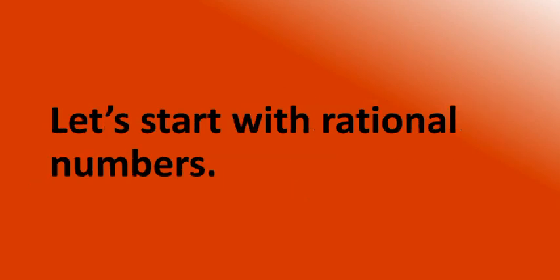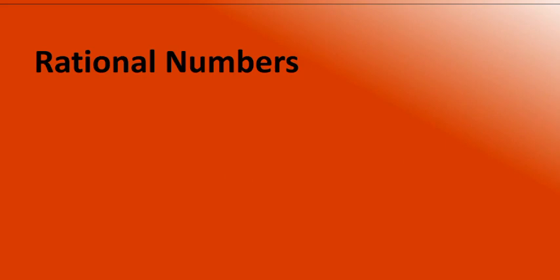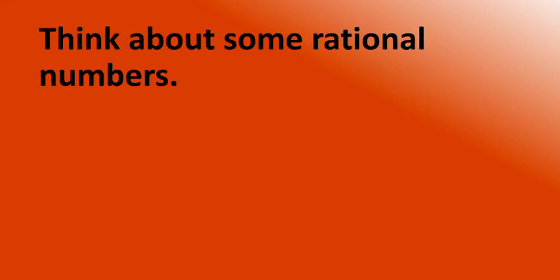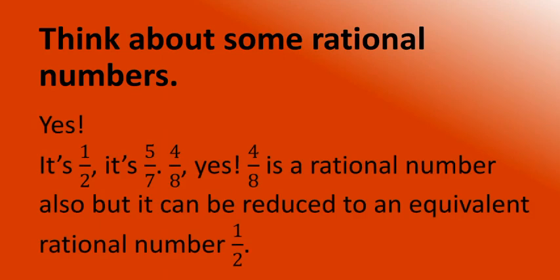Let's start with rational numbers. Rational numbers are those numbers that can be expressed in P over Q form — that is, fractional form — where P and Q are both integers and Q is not equal to zero. For example: 1/2, 5/7, and 4/8 are rational numbers. Note that 4/8 can be reduced to the equivalent rational number 1/2.